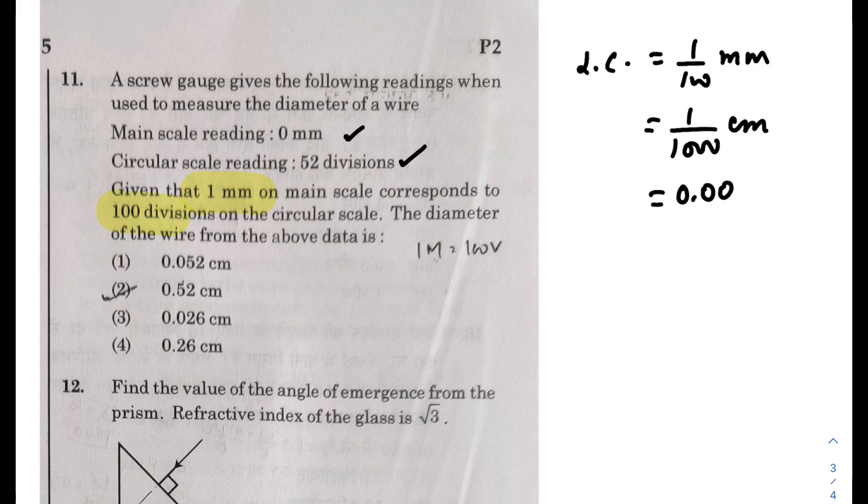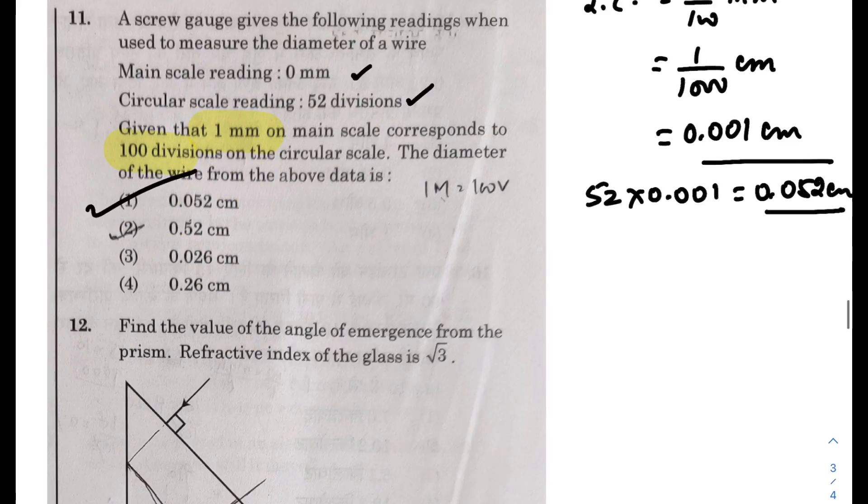So this is 0.001 centimeter. Now 52 divisions are there, so the reading would be 52 into 0.001. So 0.052 centimeters. So this would be option 1.